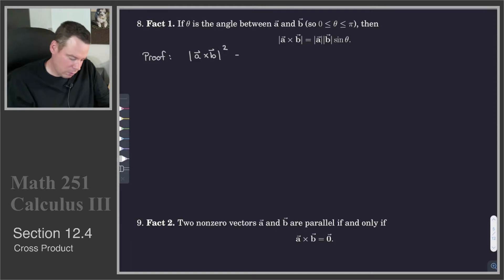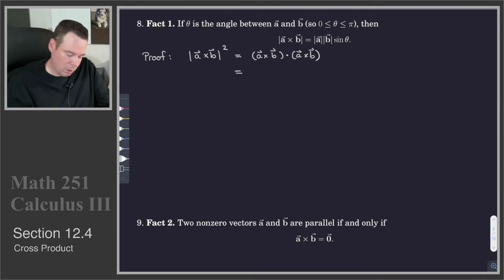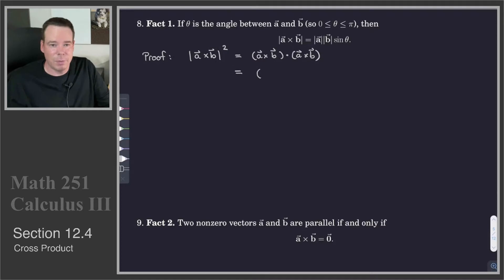The reason I start with the square is that I can write it as a dot product: it's the dot product of A cross B with A cross B. And we know from the definition of the cross product what the components of A cross B are. When I dot it with itself, I just get a sum of the squares of the components.